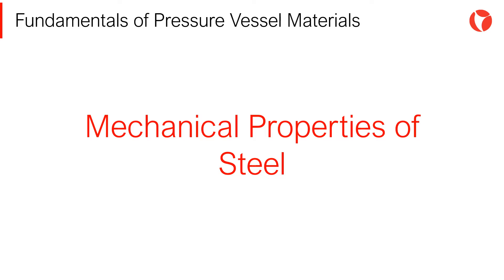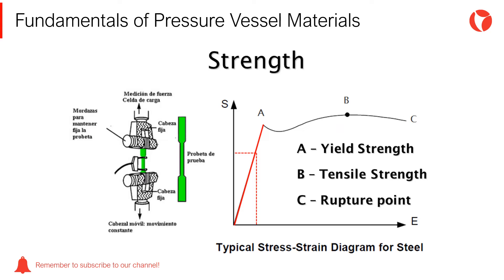First of all, the main mechanical properties of steel must be known. The basic mechanical properties of steel can be obtained through a typical stress-strain test. The diagram shows that Point A is known as the yield point. If the tension load is released at any point below Point A, the material returns to its initial state without any permanent deformation.